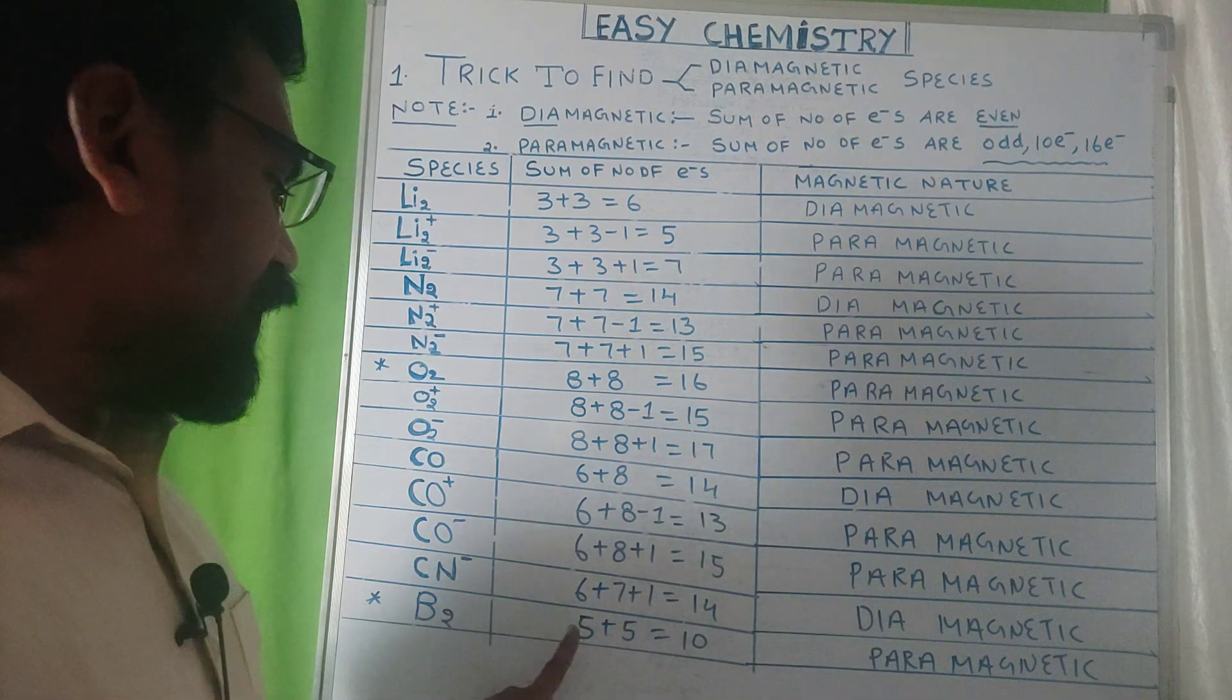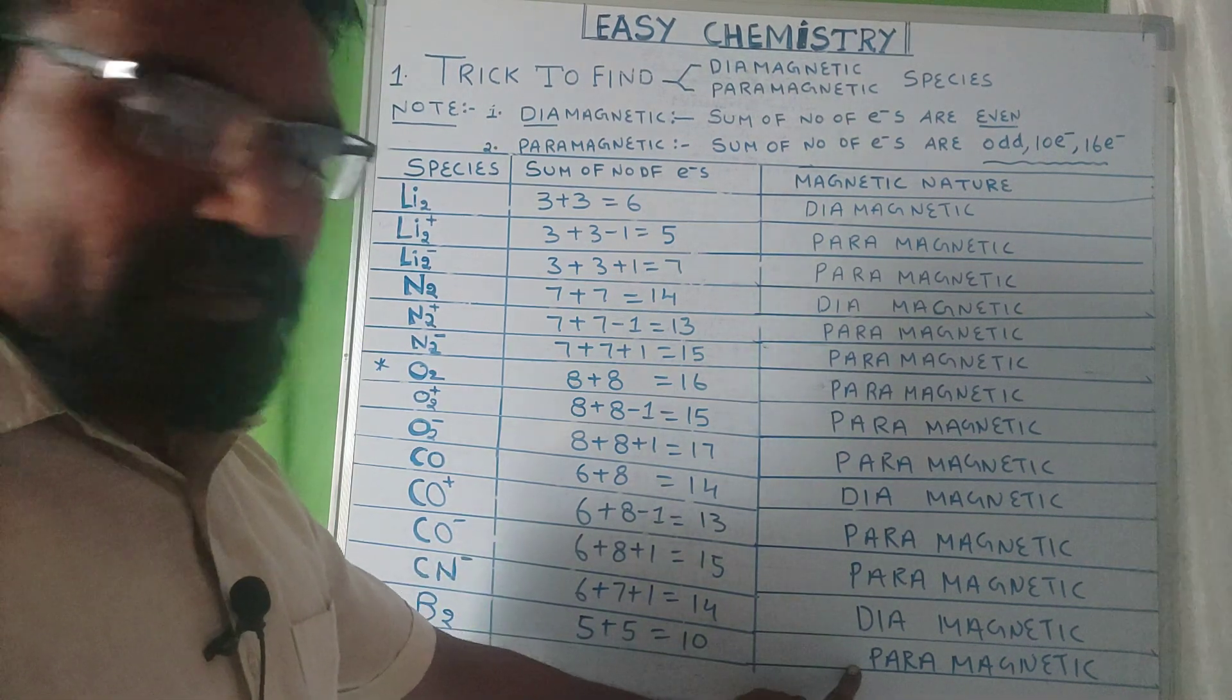B2: 5 plus 5 equals 10, paramagnetic nature.